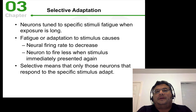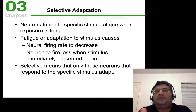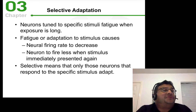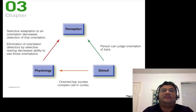Selective adaptation is a really cool way to study neurons involved in detecting certain patterns. All you do is expose that pattern to the retina for a really long time to adapt those neurons inside the brain, and then you see what happens when they've fired a lot and decreased their activity.